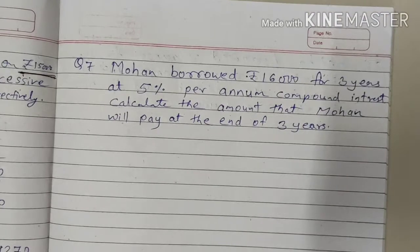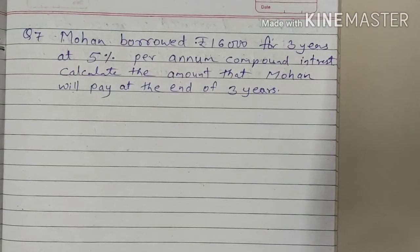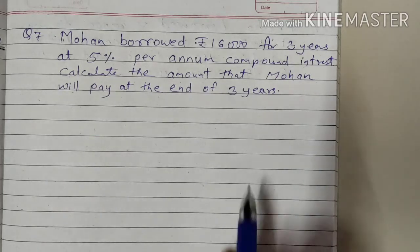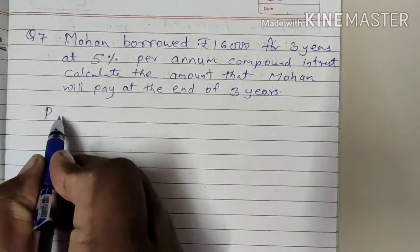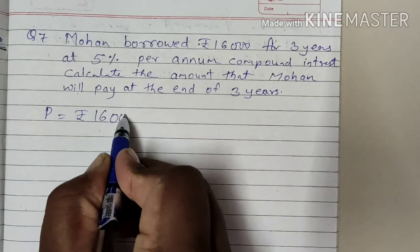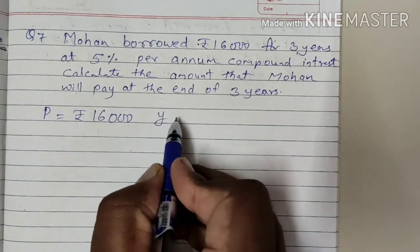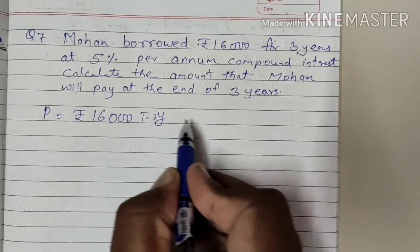Now we are solving question number 7. For the 7th question: Mohan borrowed Rs. 16,000. So the principal will be Rs. 16,000. The total number of years — time is 3 years.